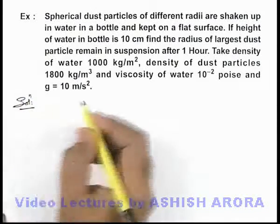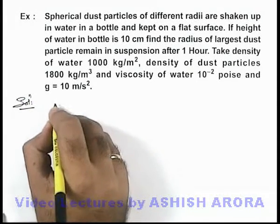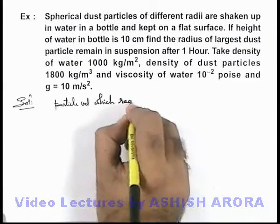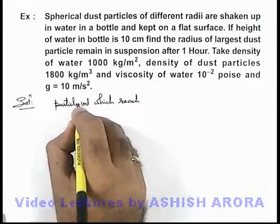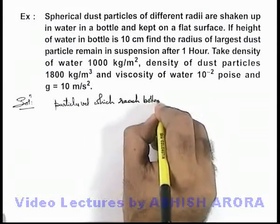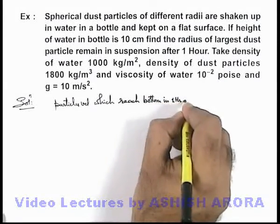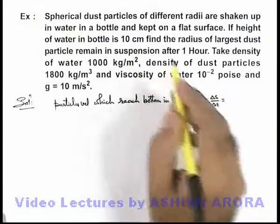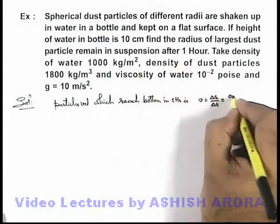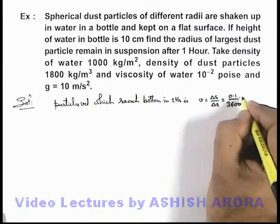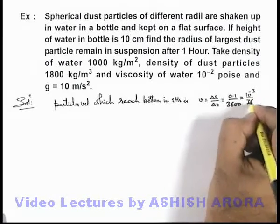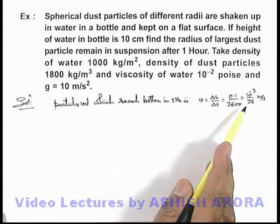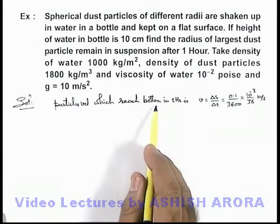We can first find out the particle velocity — that is, the velocity of particles which just reach the bottom in 1 hour. This velocity we can find as Δs/Δt. The distance is 10 centimeters and the time is 1 hour in seconds, so it is 0.1 divided by 3600, giving a speed of 10 to the power minus 3 by 36 meters per second. Particles traveling with speed less than this value will remain in suspension even after 1 hour, as they won't be able to reach the bottom.